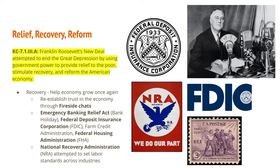The government also created the Federal Deposit Insurance Corporation, which began guaranteeing people's savings deposits in banks. During the Great Depression, up to $5,000 was insured — if your bank failed, the FDIC would return your money up to that limit. The FDIC is still around today; the limit was $100,000 for a long period, then increased to $250,000 after the Great Recession in 2009.